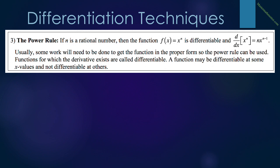The first two rules were simple. But the third rule — the power rule — is a little more complicated and is probably the most important rule you will learn this year. It says that if n is a rational number, then the function f of x equals x to the n is called differentiable, and the derivative with respect to x of x to the n equals n times x to the n minus 1. The rule is simple: we bring the power in front and reduce the power of x by 1. Functions for which the derivative exists are called differentiable functions. A function may be differentiable at some x values and not at others.